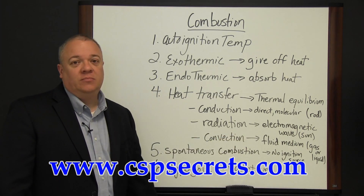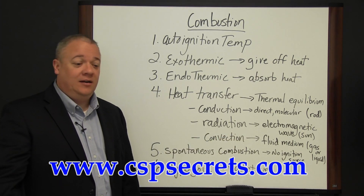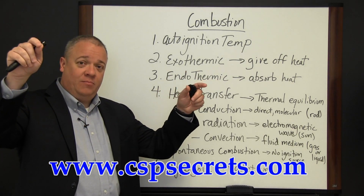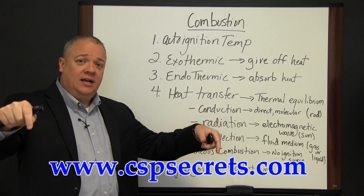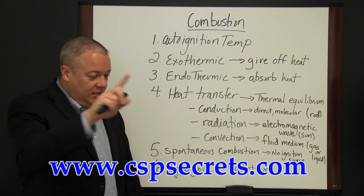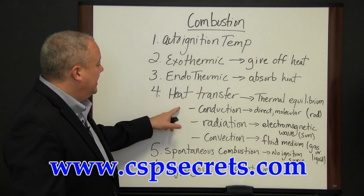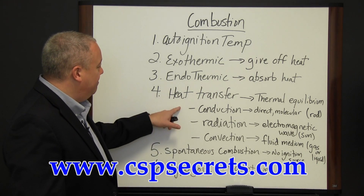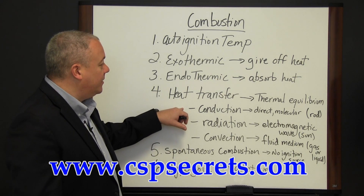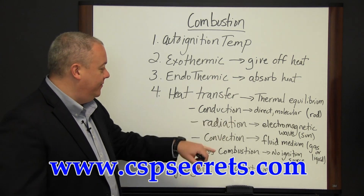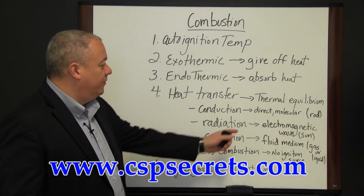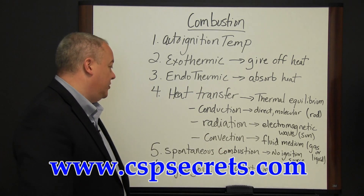The same applies to air — hot air, less dense and lighter, rises; cold air, more dense and heavier, sinks, gets heated, and circulates around. So you get these circular convection currents. The main things to keep in mind around heat transfer are: conduction — direct molecular transfer; radiation — electromagnetic waves; and convection — circular motion through a fluid medium, gas or liquid.